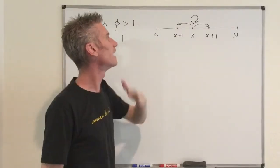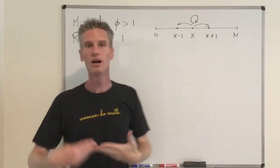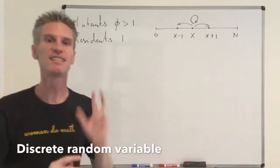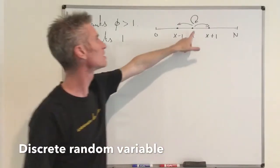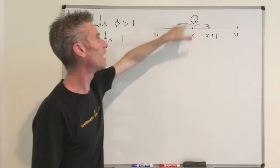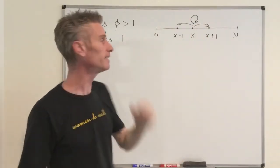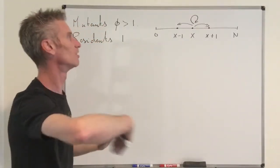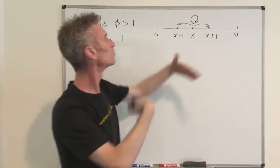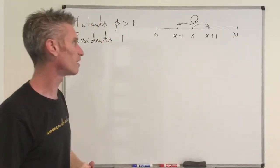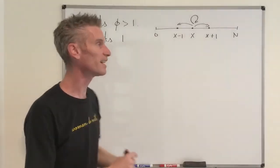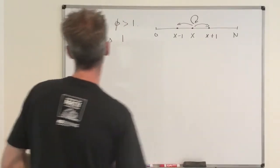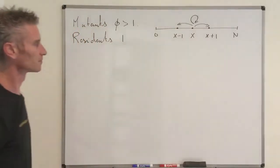From the transition probabilities, you just need at each time step to generate a discrete random variable with a range of size three, because you have three possible outcomes at each update. By simulating this random variable at each time step — whose parameters depend on X — you will eventually build your process.